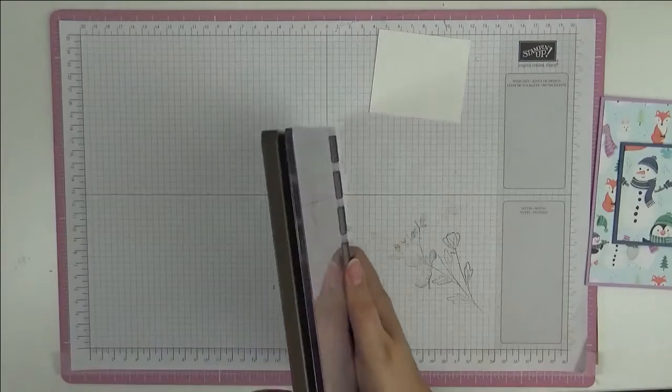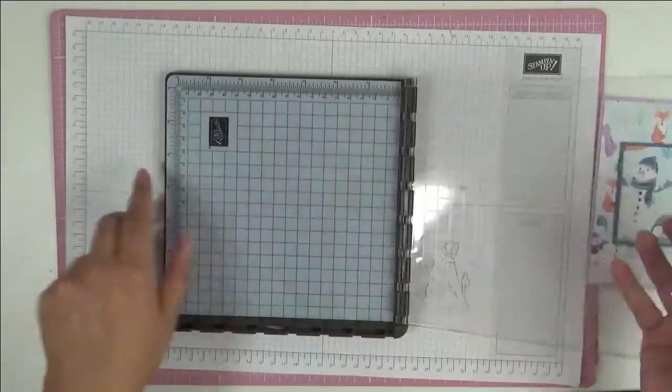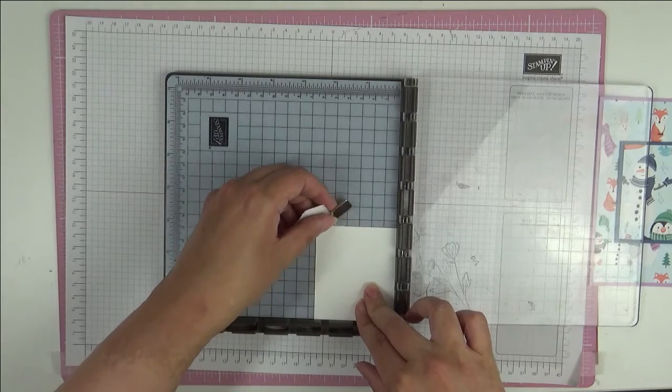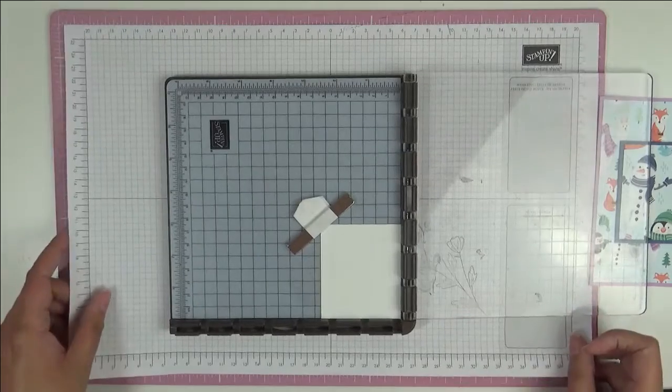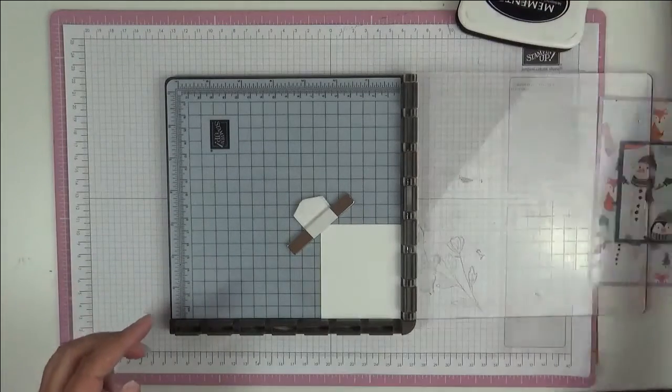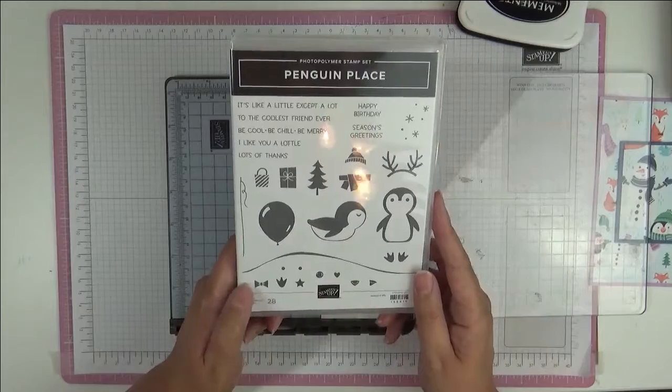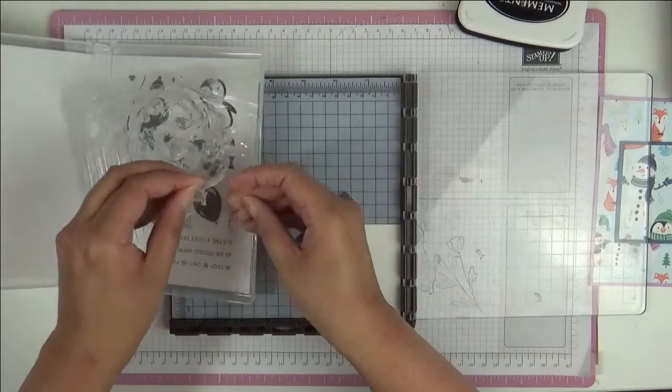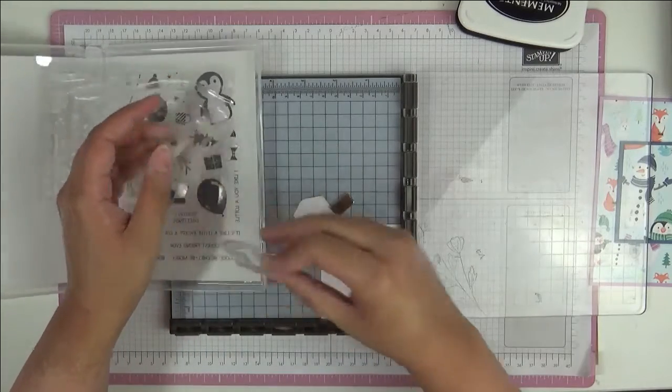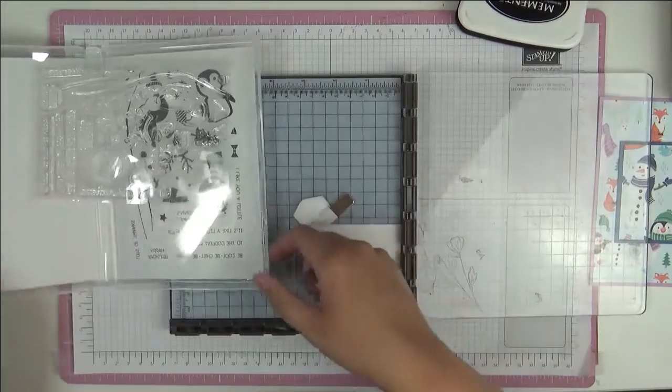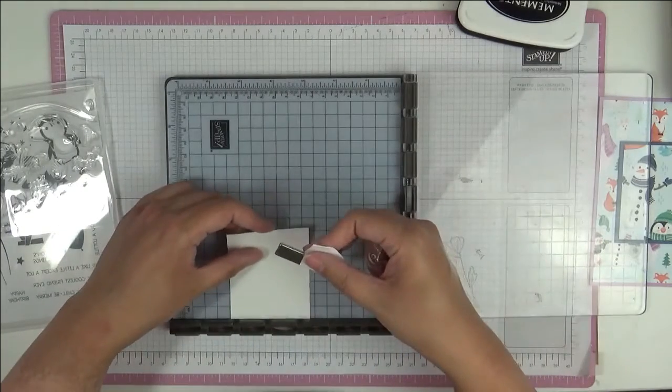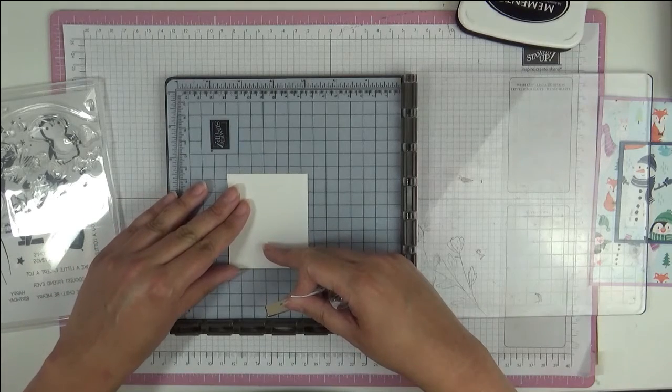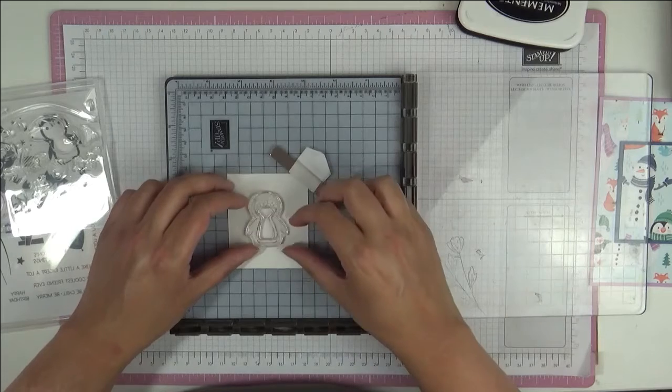I'm going to use the Stamparatus. I'll put my little piece here of basic white inside, like that. I'm just going to line everything up. I'll show you the stamps that we're going to use. It's a matching one called the Penguin Place. I'm going to use this little fella here. Those are my magnets; they'll hold everything in place.